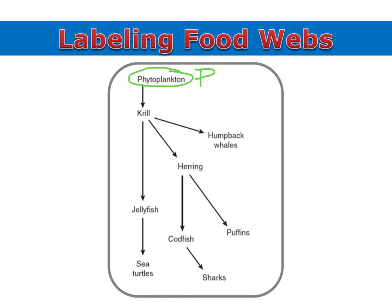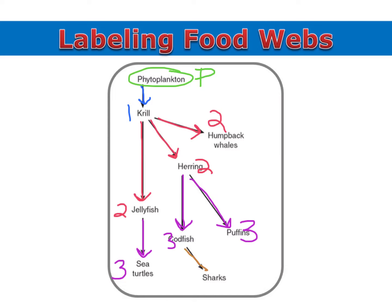So phytoplankton are our aquatic producer here. Since the krill eat the phytoplankton, the krill are our primary consumers. Everything that eats the krill would be a secondary consumer. And sea turtles are a tertiary consumer because they eat that secondary consumer. Everything here that eats the herring is tertiary. And that makes the sharks a quaternary consumer.